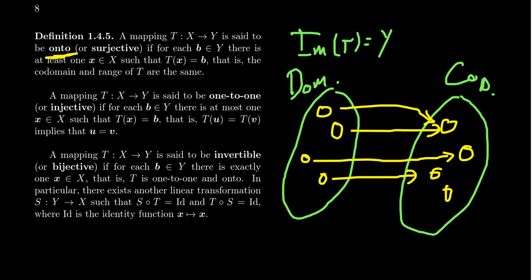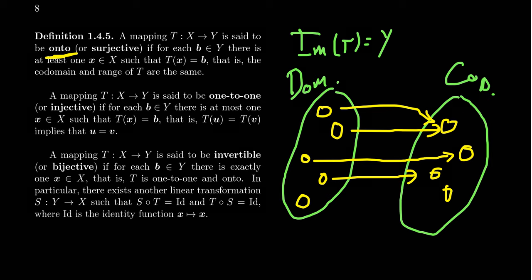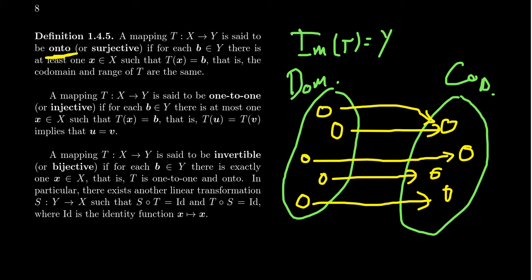So onto means that every vector in the codomain has an arrow mapping to it. If there's another vector that maps over here as well, this would now be an example of an onto map — every vector B in the codomain has at least one vector which maps onto it. That's why we call it onto, or a surjective function.